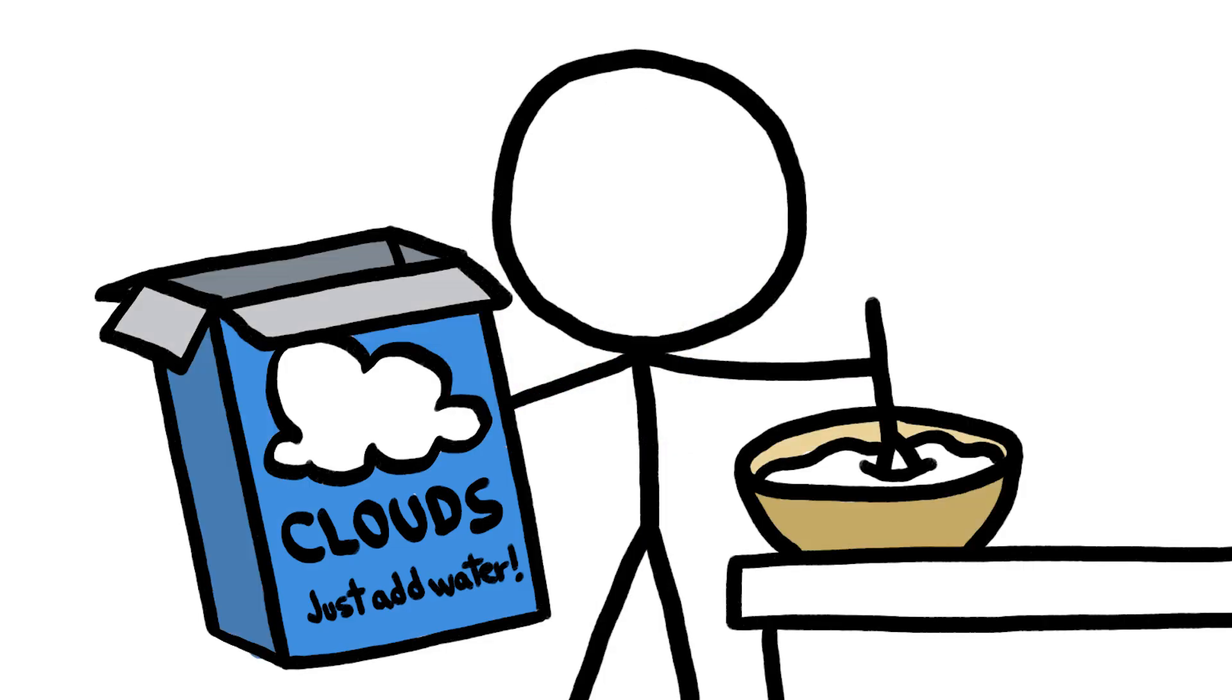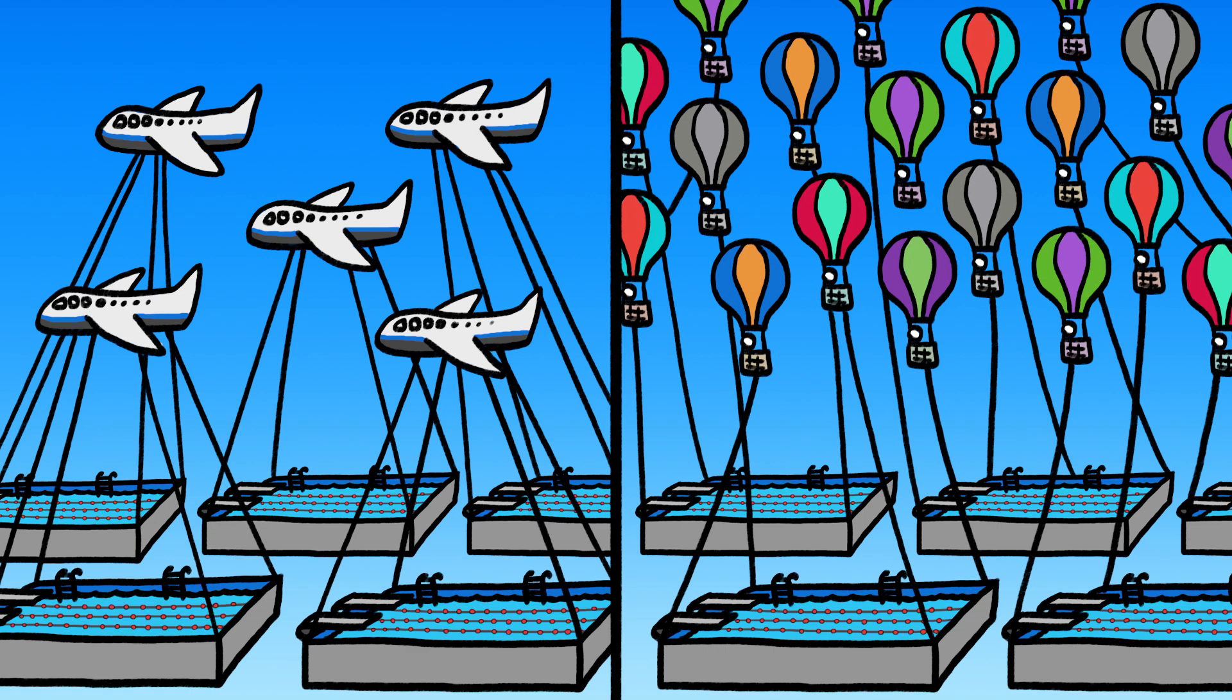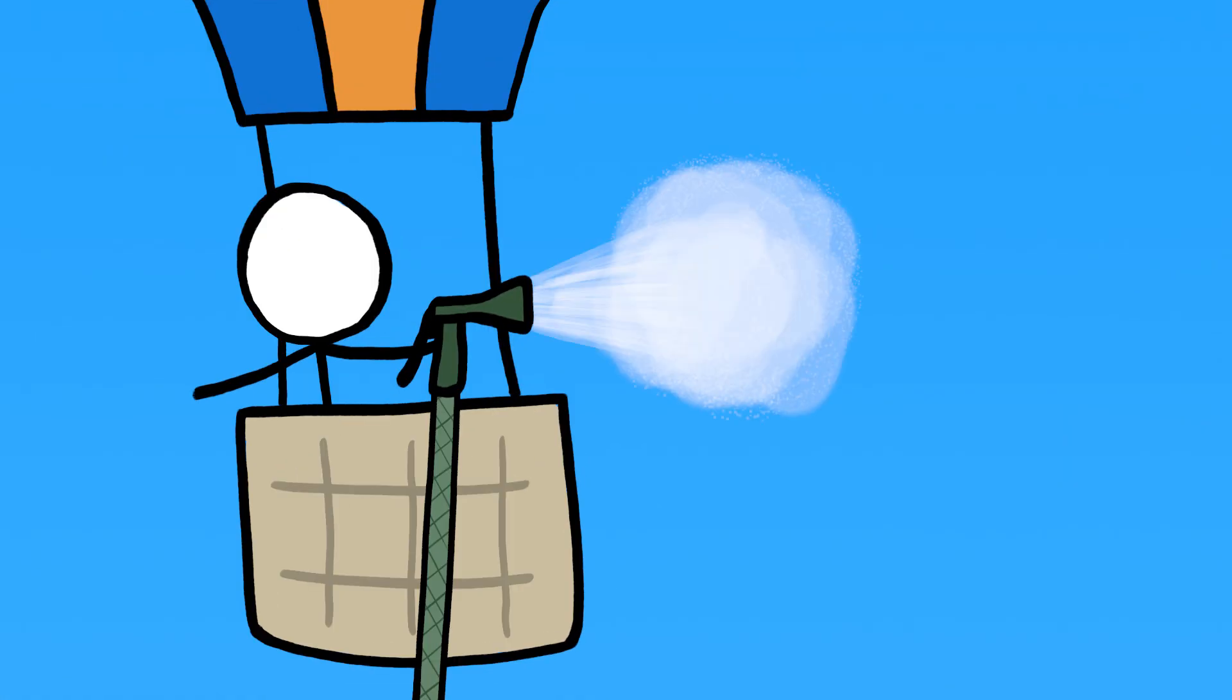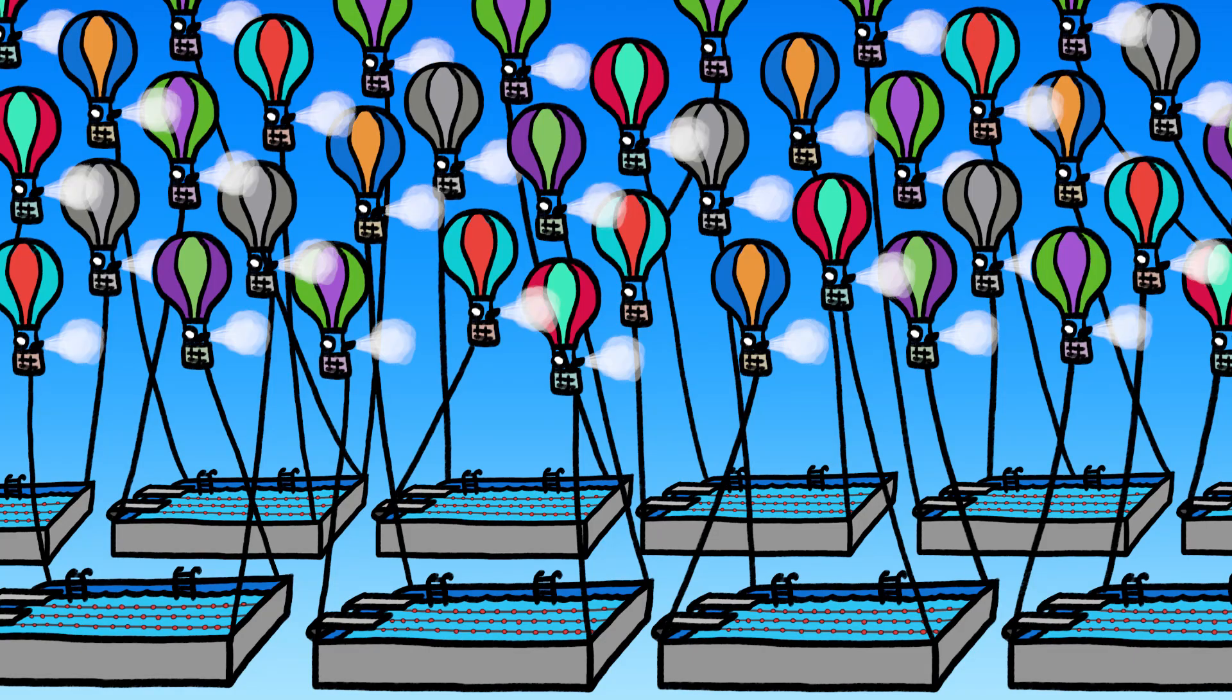If we wanted to make a cloud entirely from scratch, we'd first need a whole fleet of jumbo jets or several hundred hot air balloons to haul hundreds of tons of water up to the sky. And then, somehow, we'd need to disperse all that liquid into a mist of droplets small enough to float. In short, it wouldn't be easy.